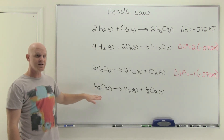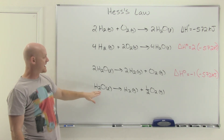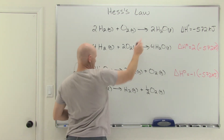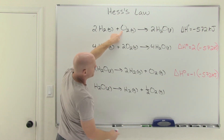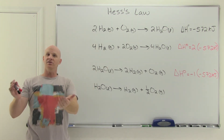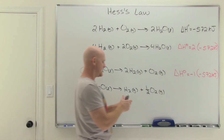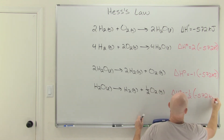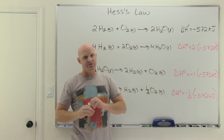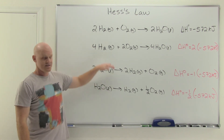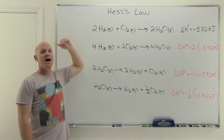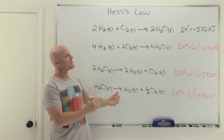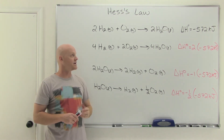The last variant has been both reversed and cut in half: the coefficient of 2 is now 1, and the coefficient of 1 is now one-half. Cutting all coefficients in half cuts delta H in half, and reversing direction changes the sign. So delta H equals negative one-half times negative 572 kilojoules, or equivalently half of positive 572 kilojoules. The key idea is that if I give you a reaction's delta H, I've also given you any multiple of that reaction's delta H, and we'll use this tool when applying Hess's Law.